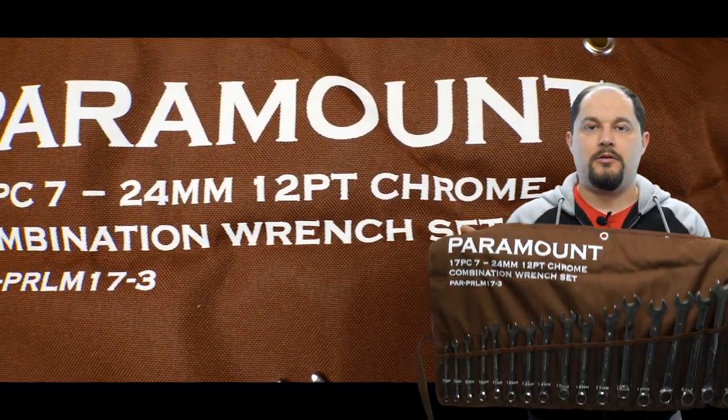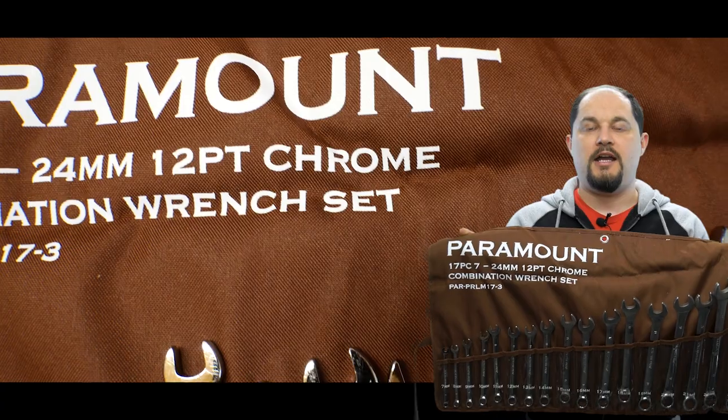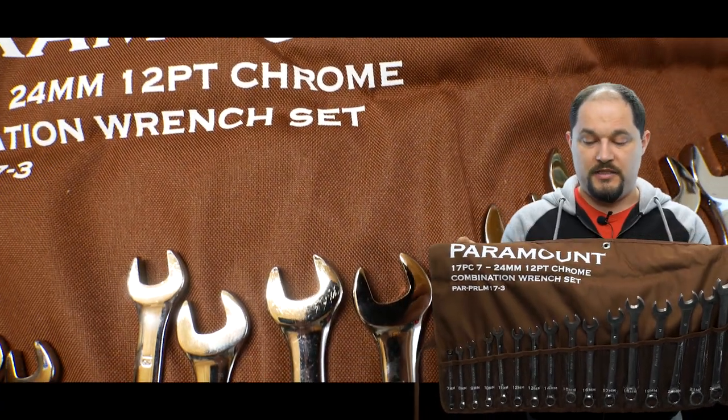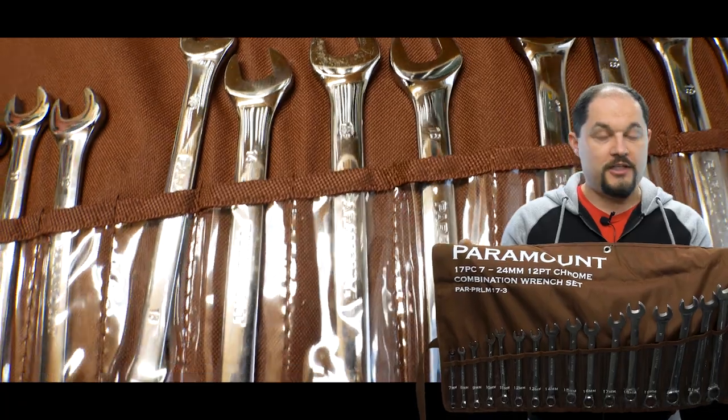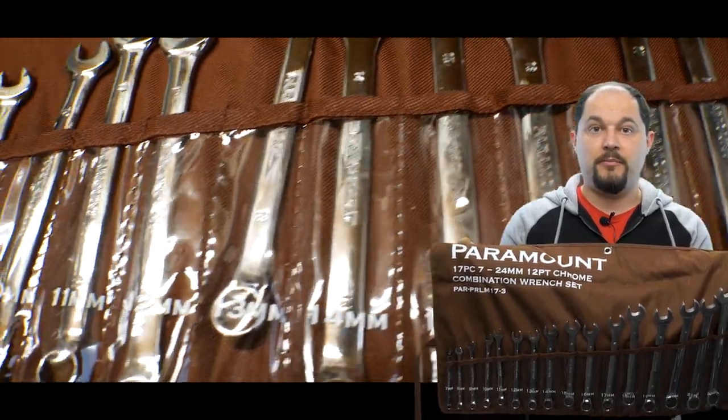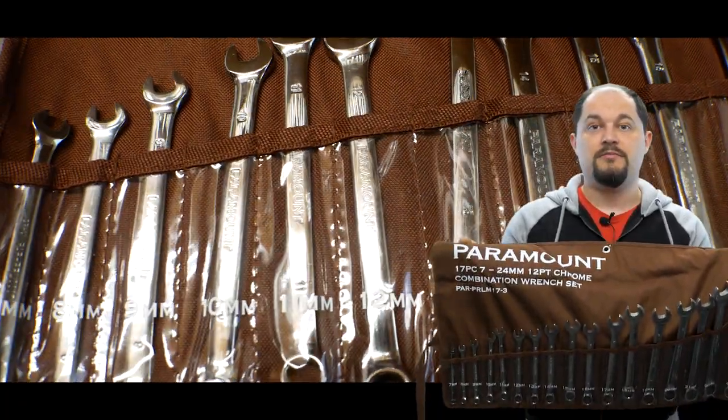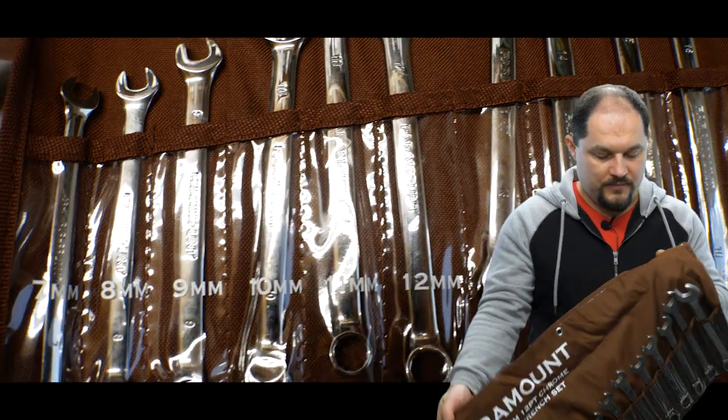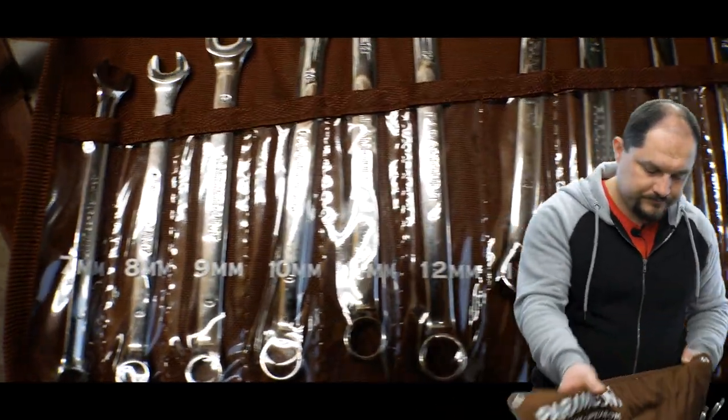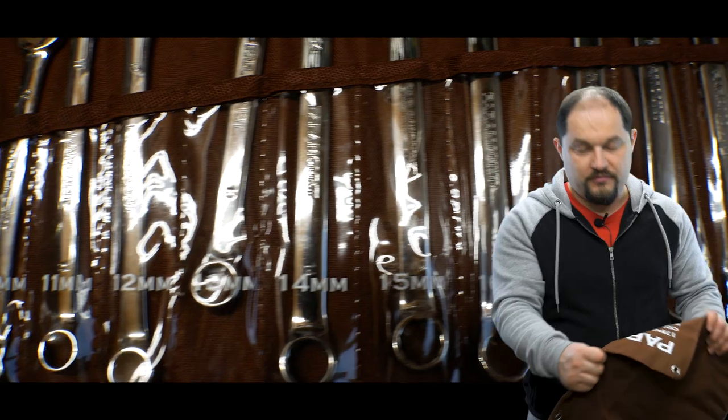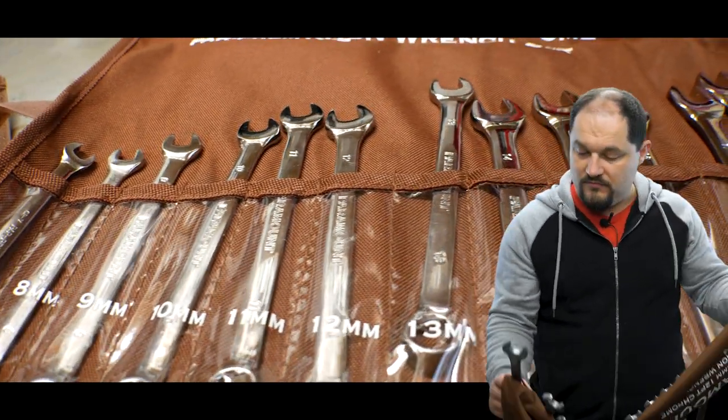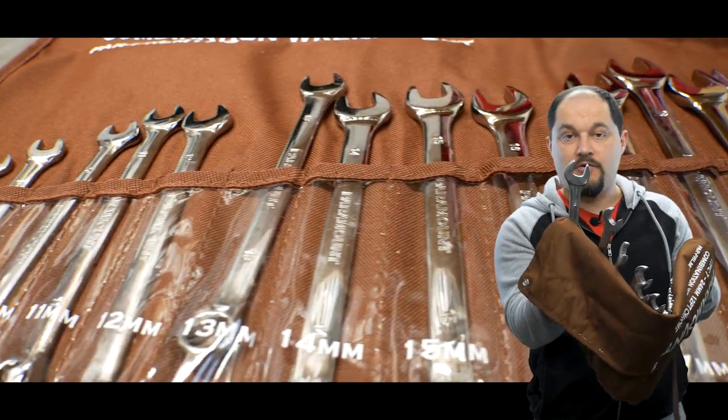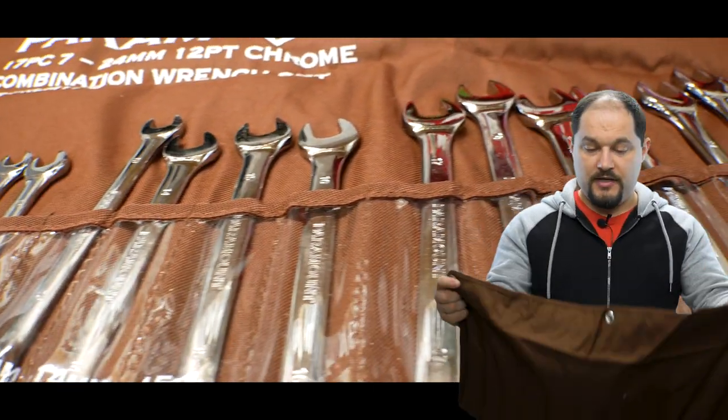My next recommendation is a good quality spanner set. I have this Paramount set, it's 17 piece from 7 mil to 24 mil, finished in full mirror polish chrome vanadium set. Absolutely amazing, very good quality. Never had a problem with it rounding off bolt heads or the fork ends opening up or anything like that.